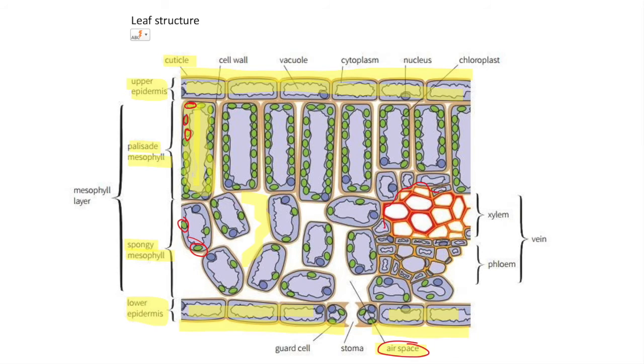Vascular means vessel. The vessels contain xylem and phloem. Xylem transports water and mineral salts, phloem transports sugars. So xylem brings water and salts into the leaf, and phloem brings sugars away from the leaf because the leaves are the ones producing the sugar.